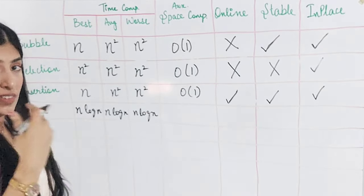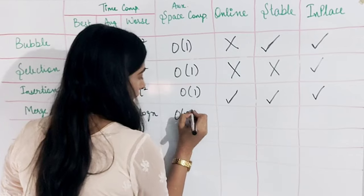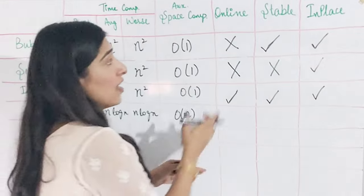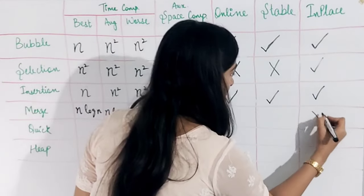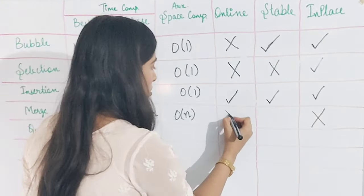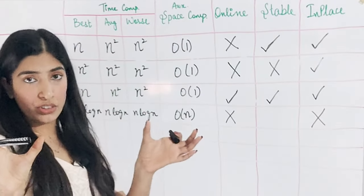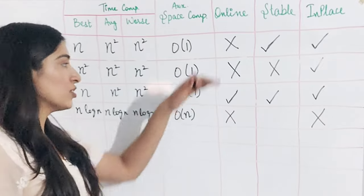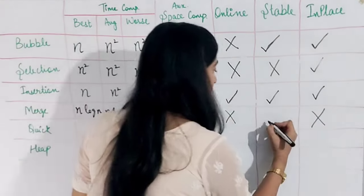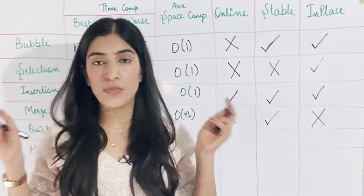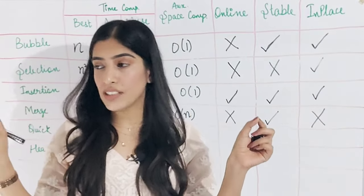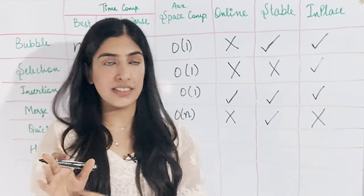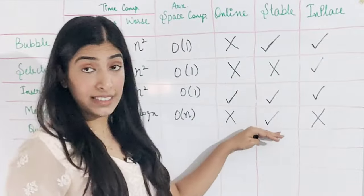While merging, we need some extra space because we keep two pointers and insert into a temporary array then copy it. So the auxiliary space complexity is O(n), meaning it is not in-place. Is it online? No — we have already divided our array into two halves and are merging them, so if more data comes, we cannot accommodate it. Is it stable? Yes — we merge elements pointer by pointer, comparing and placing them in order, so no random swapping happens and the relative order is preserved.